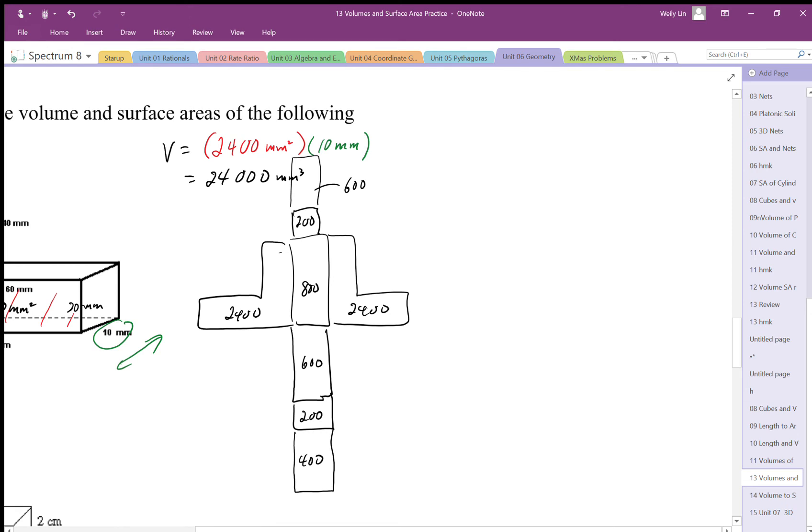So I'm going to add up all these surfaces: 600, 200, 800, 600, 200, 400, and then plus my two side pieces. I'm just going to add those together, just make that 4,800. Okay, add them all up so I get...